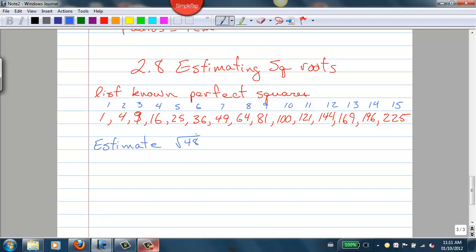Something like the square root of 48. So we know that the square root of 48 is between 36 and 49. It's pretty close to 49 actually. We know that the square root of 36 is 6, and the square root of 49 is 7. So that would mean that the square root of 48 must be pretty close to 7, like 6.9.